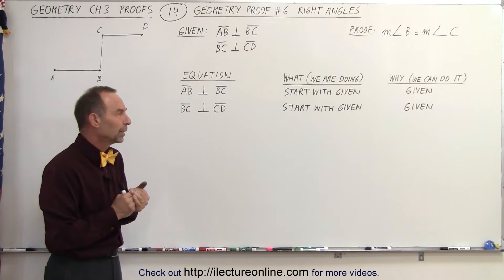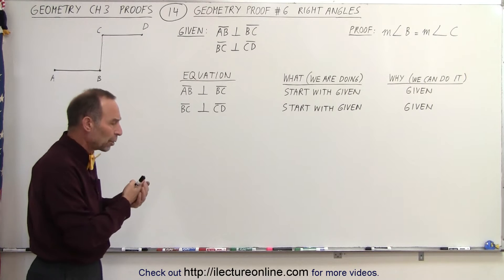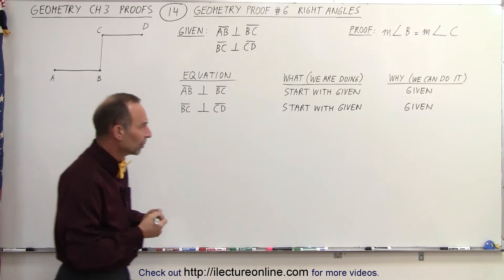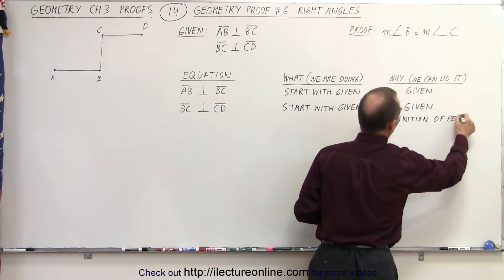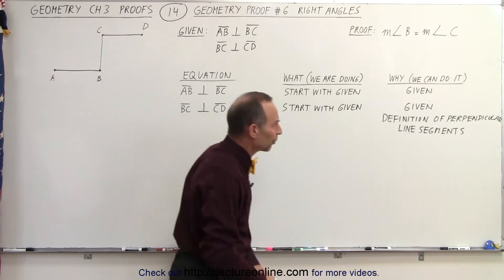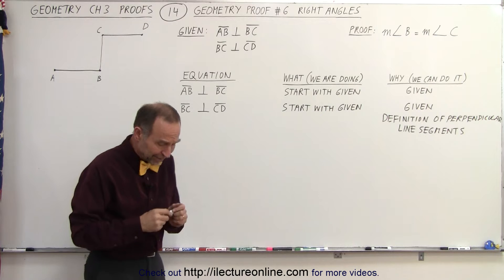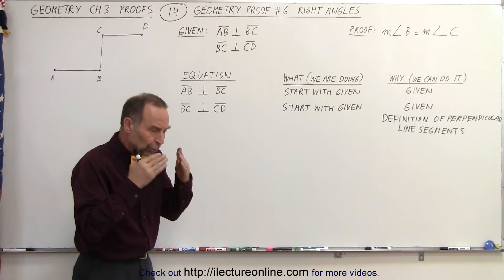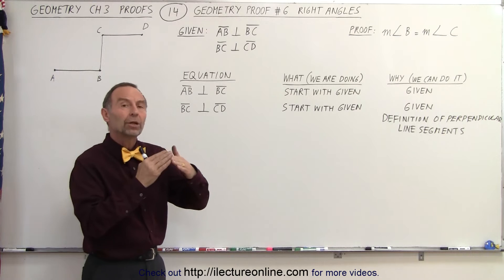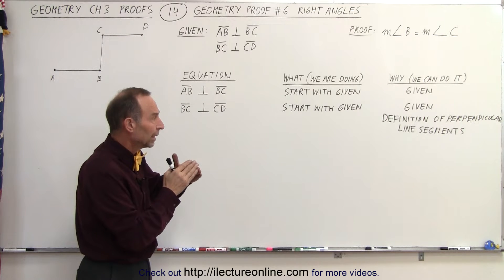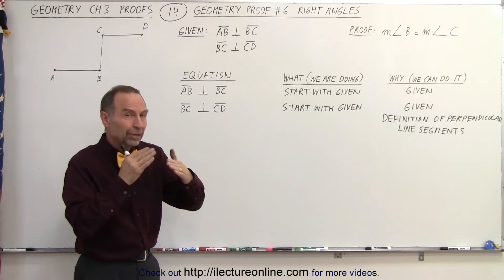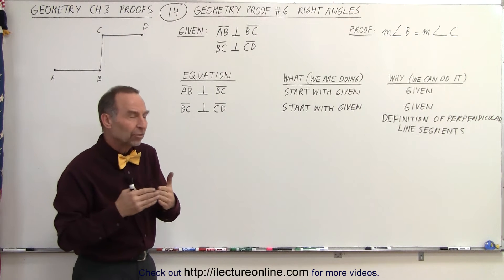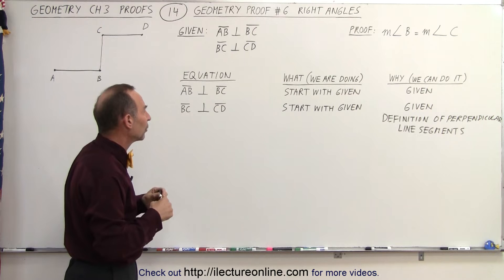What can we conclude from that? We have what we call the definition of perpendicular line segments. If two lines meet one another — cross one another — in a fashion so that they're perpendicular, then the angles they make are equal to 90 degrees. In other words, they are right angles.